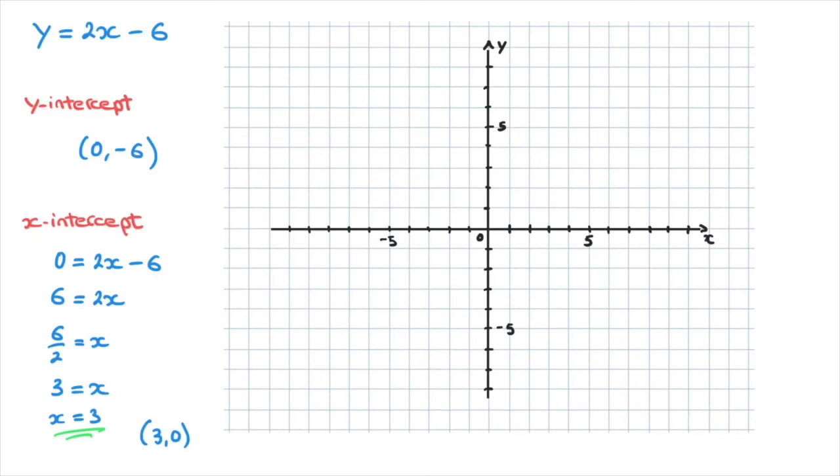Now that we have our grid ready, we can go ahead and plot the points. So I'll start with the y-intercept. That's the point with coordinate (0, -6). And the fact that x is 0 tells us that we're on the y-axis. And the y-value is negative 6. So starting from 0, we go 1, 2, 3, 4, 5, 6 downwards. And I'll just add that point.